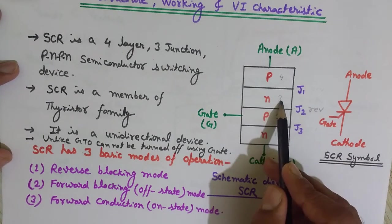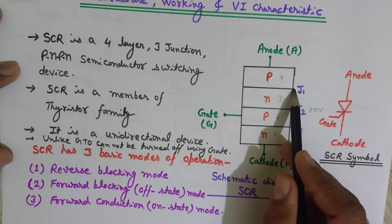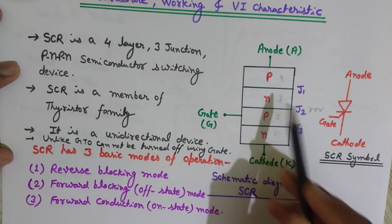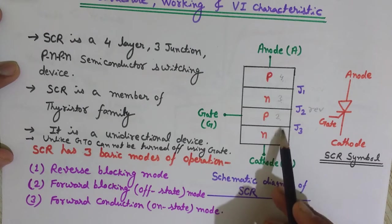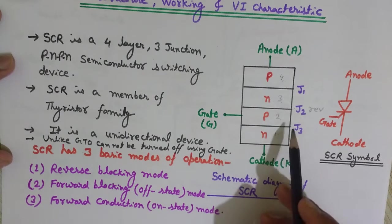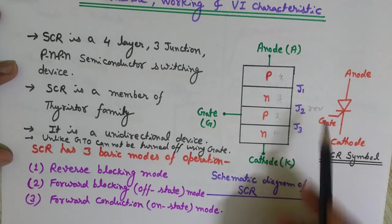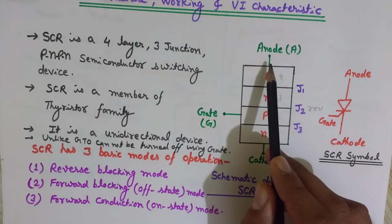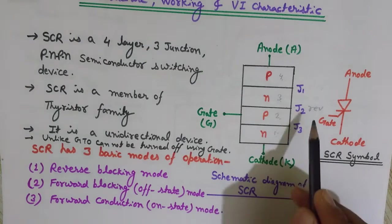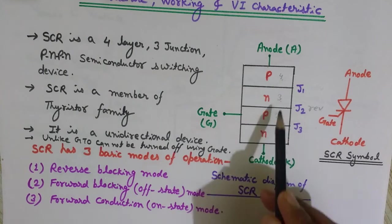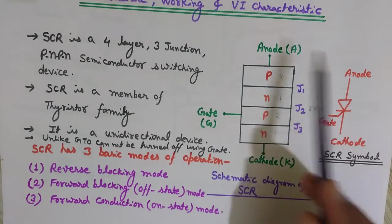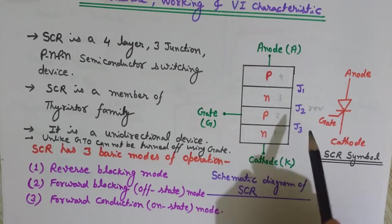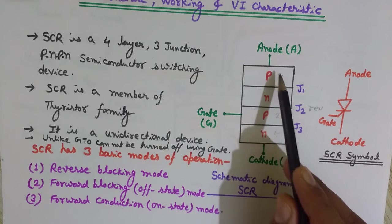You can see that junction J2 is reverse biased because N is at higher potential than P at that junction. In the cases of J1 and J3, P is at higher potential than N, so they are forward biased. However, because junction J2 is reverse biased, it is still trying to stop the current — it is not allowing current to flow. The SCR is acting as an open switch.